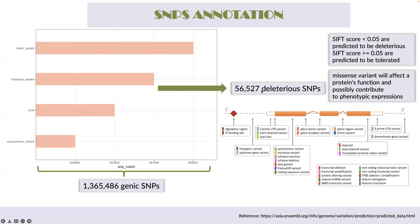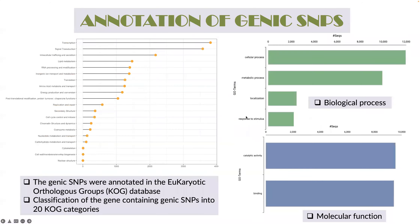In this study, about 56k SNPs were found to be deleterious. Deleterious SNPs are missense variants that affect protein function and possibly contribute to phenotypic expression. We further annotated genes with genic SNPs using the Eukaryotic Orthologous Group (KOG) database. Genes containing genic SNPs were highest in transcription, signal transduction, intracellular processes, and lipid metabolism. In gene ontology terms, these genes were highly represented in cellular process, metabolic process, localization, and response to stimulus. In molecular function, catalytic activity and binding were the most prominent terms.